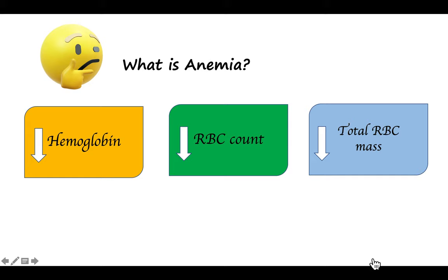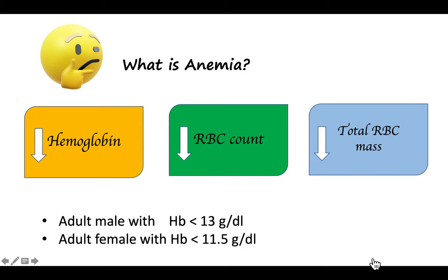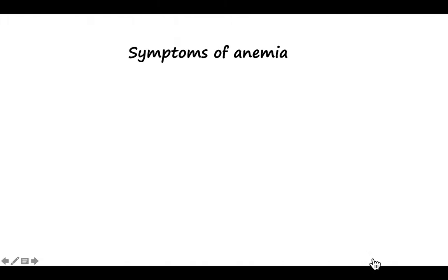For adult males, anemia means hemoglobin less than 13 grams per deciliter — that's the cutoff value. For females, the cutoff value is 11.5 grams per deciliter, so any female with hemoglobin less than 11.5 grams per deciliter is labeled as anemic. Now we proceed to the symptoms of anemia.